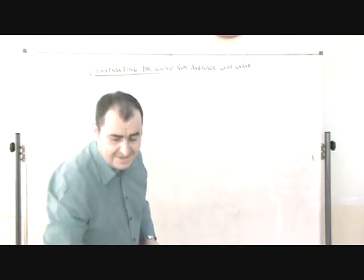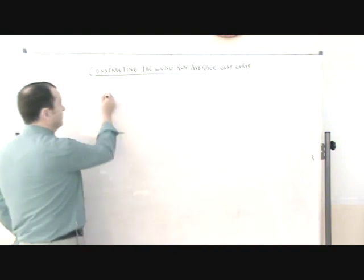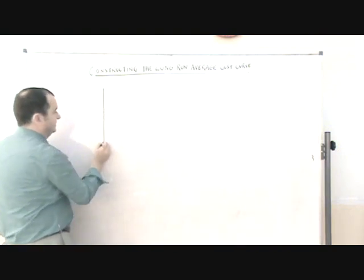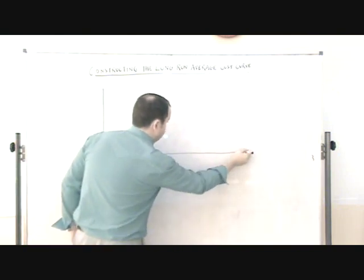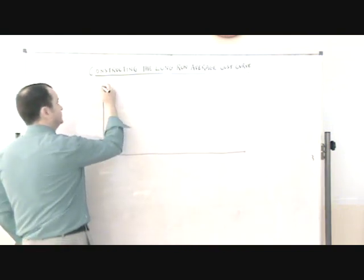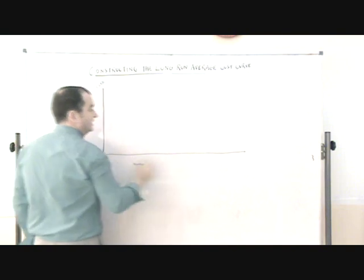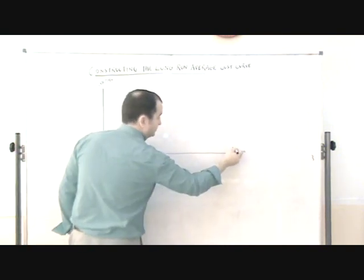So I need more room. And I'm going to show you now the long run average cost curve. So here we have the same axes. These are costs and revenues. And this is output.